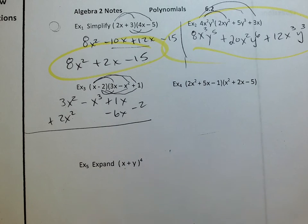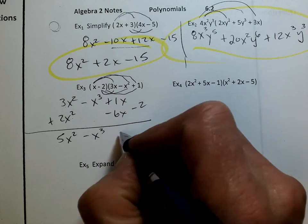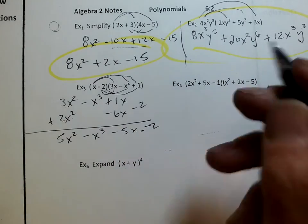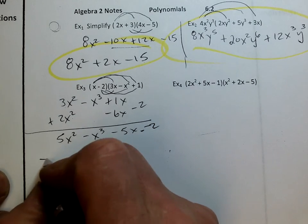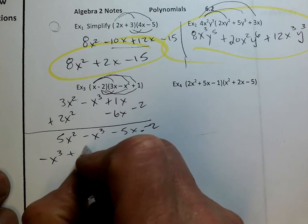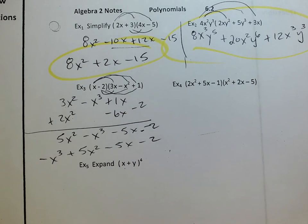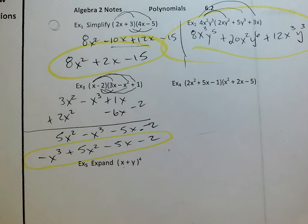So when I combine like terms, I don't mess with the exponents. I'll have 5x squared minus x cubed minus 5x minus 2. That answer is acceptable, but it really should be in descending order. So it really should be negative x cubed plus 5x squared minus 5x minus 2. That's a better answer. Biggest exponent all the way down. Thumbs up.